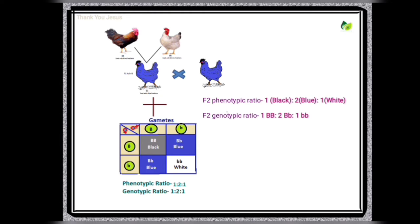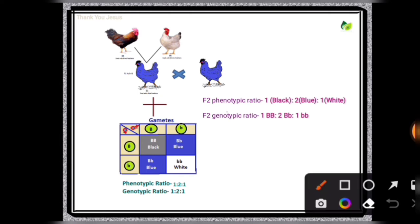Looking at the Punnett board, one black-feathered bird, two blue-feathered birds, and one white-feathered bird are obtained in the F2 generation.